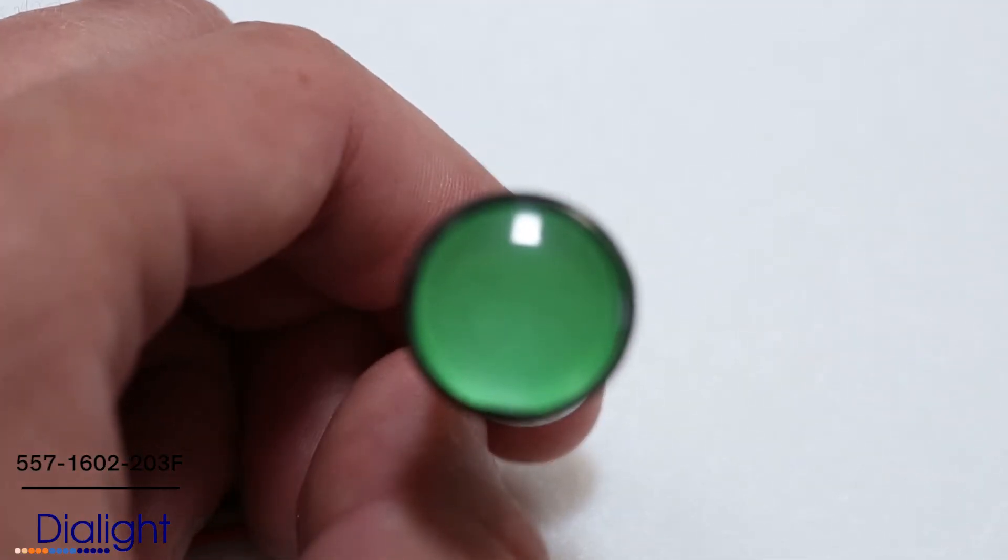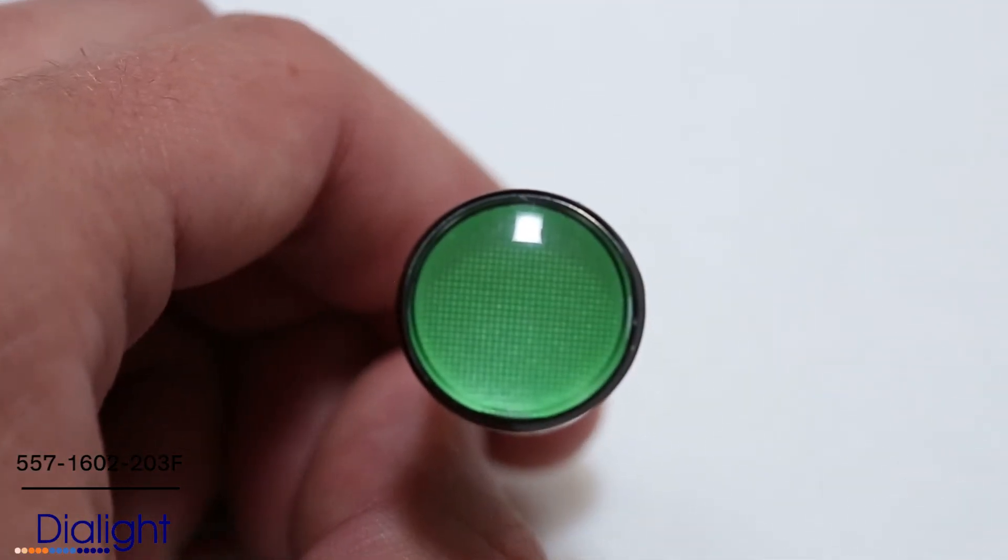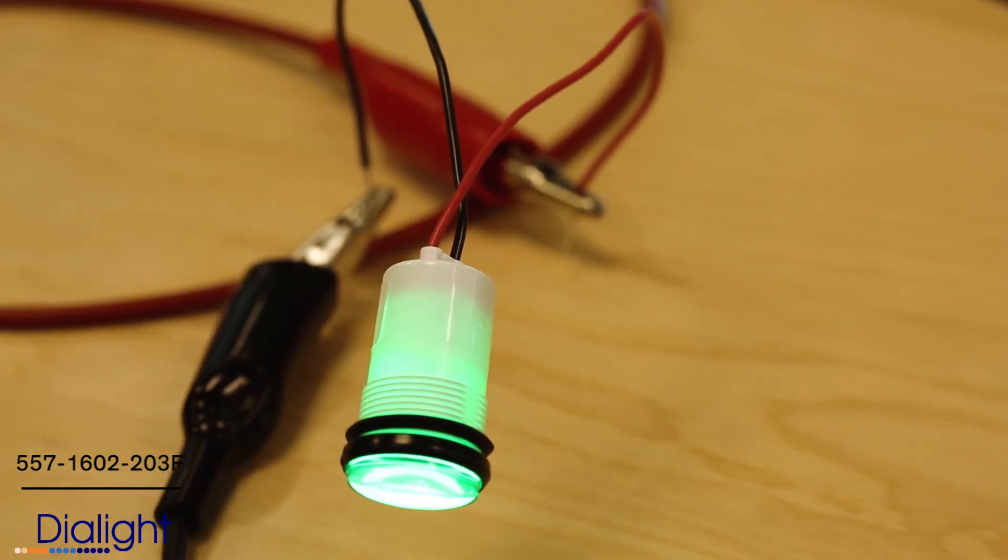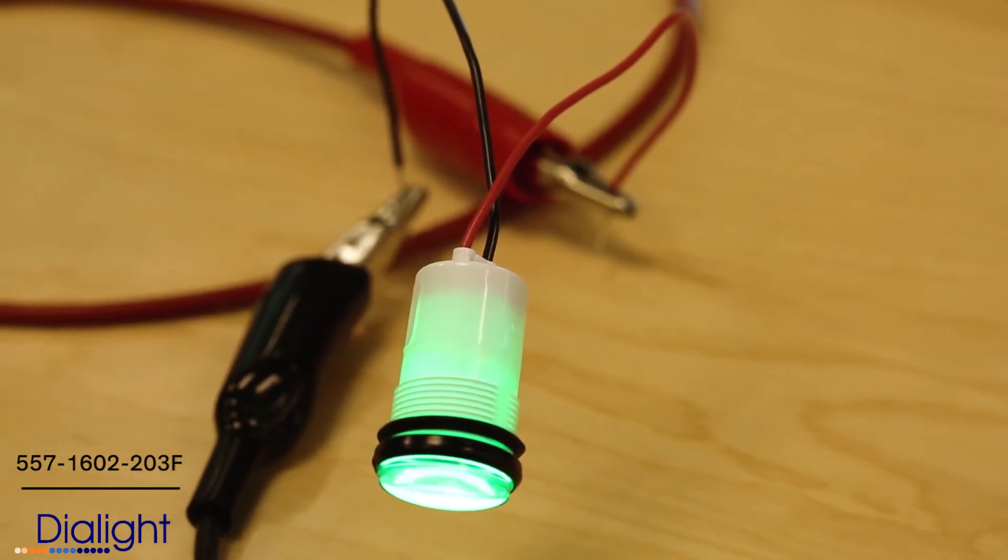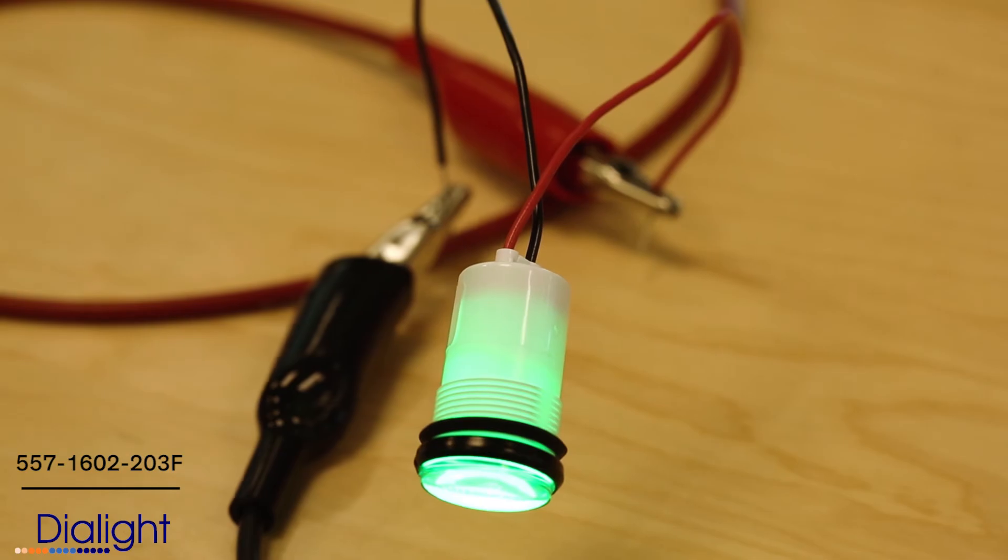The 557 series features a low-profile, flat-lens design, operating voltages of 5, 12, or 24 volts DC, and a long life of up to 100,000 hours.